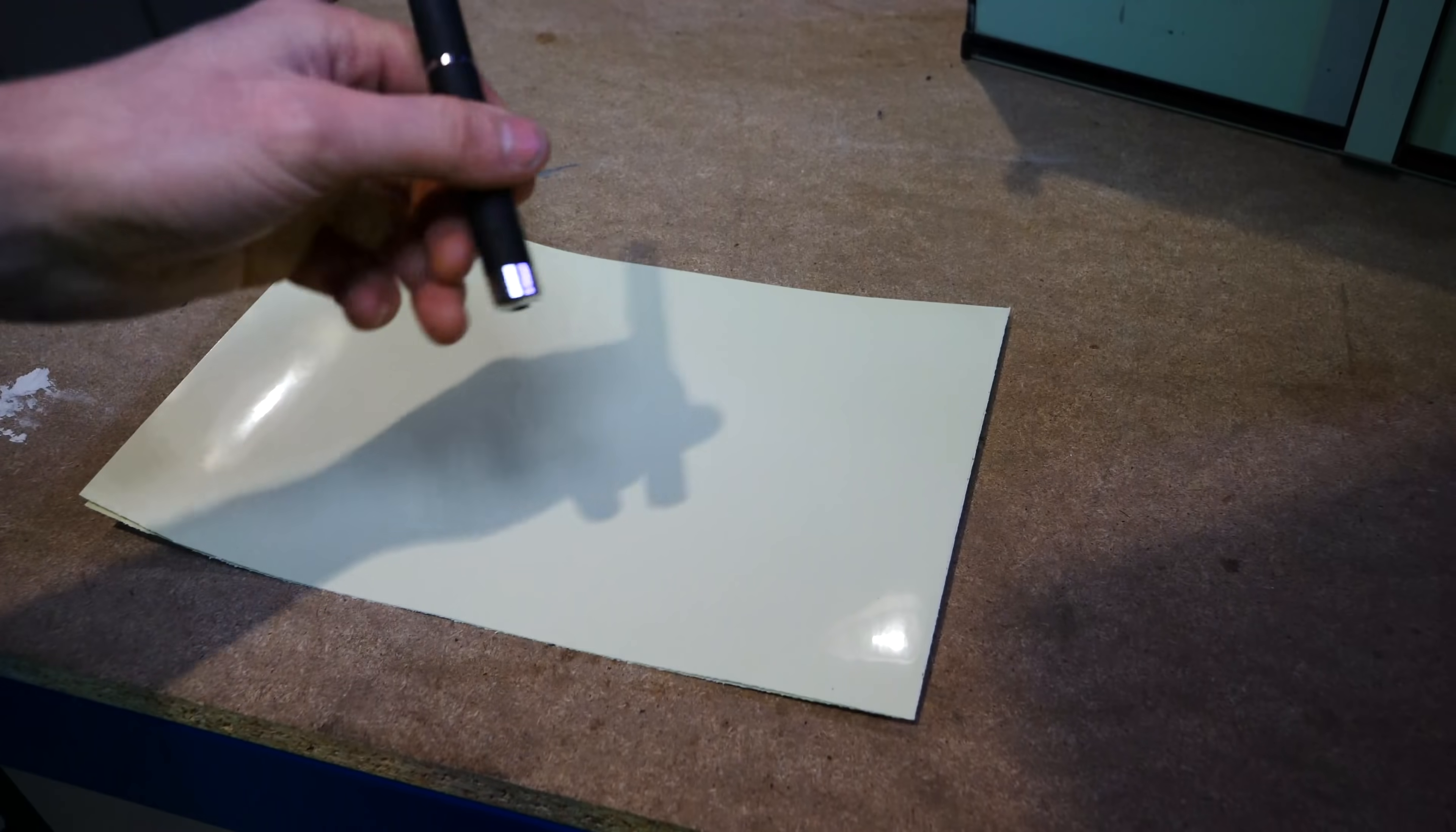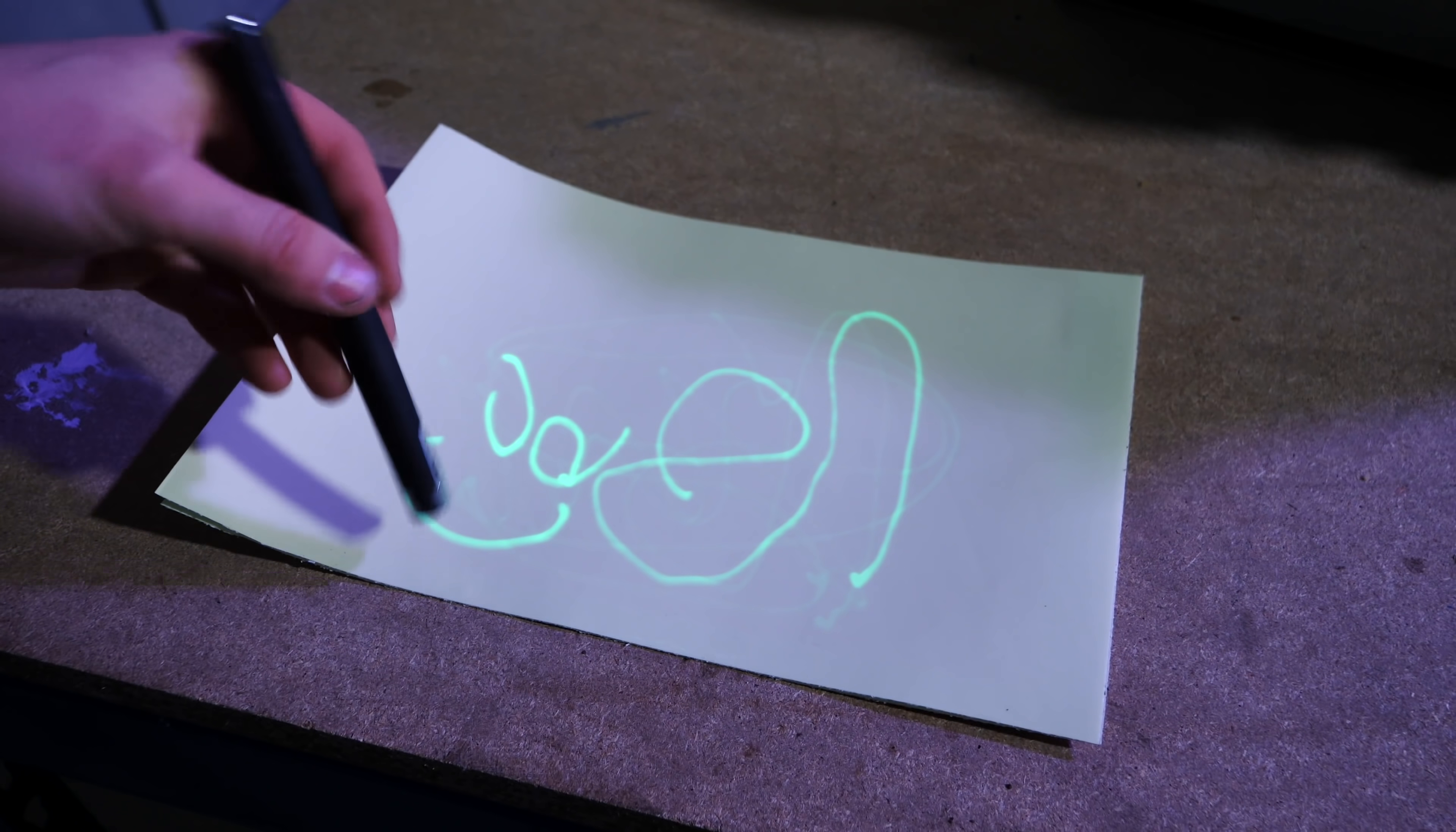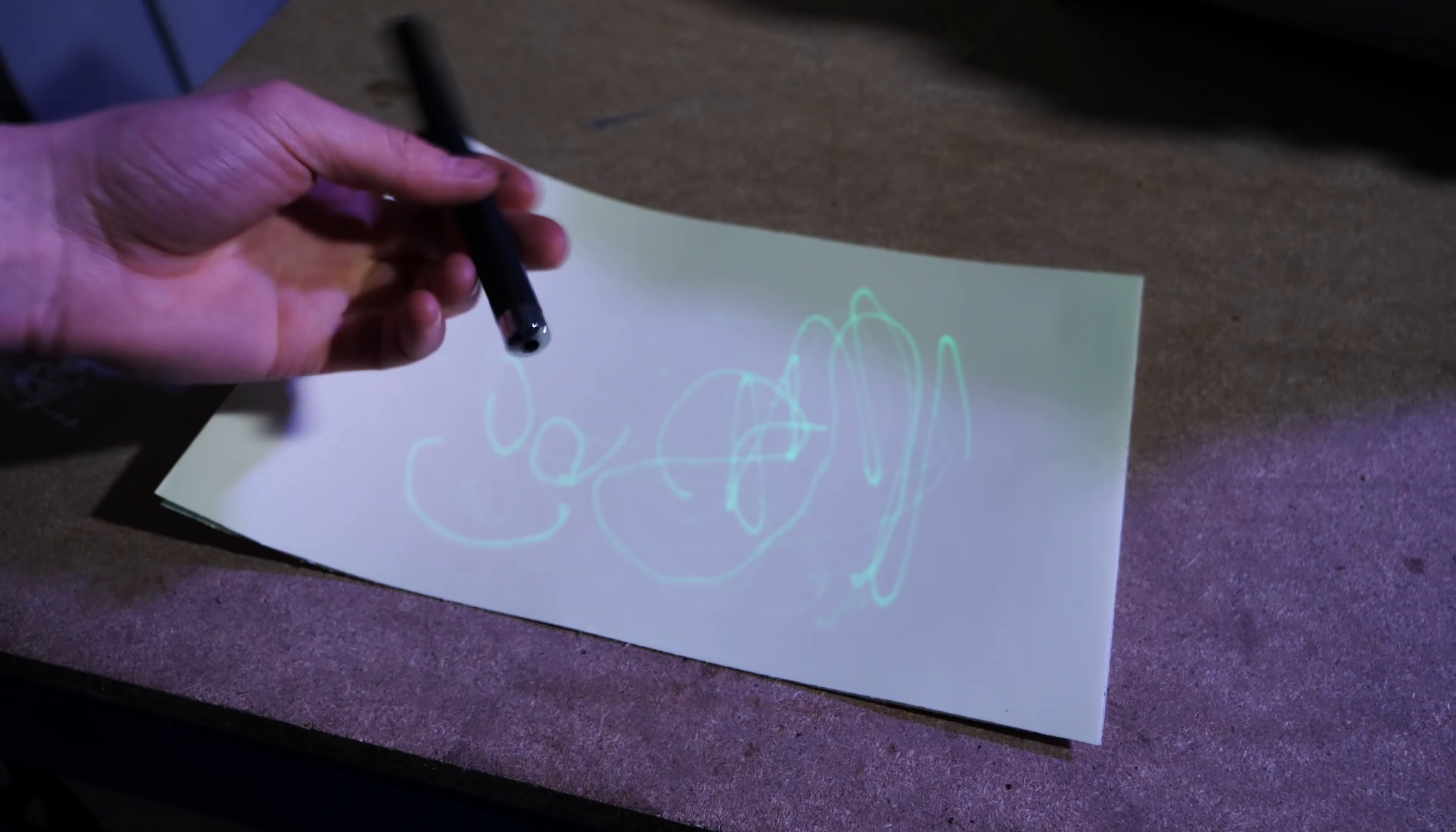As you can see, as you write on it, it basically records it onto the paper and then it stays there for a certain amount of time and runs out of energy and disappears. So this is going to act as the pen on the plotter and this is going to act as the paper, meaning we don't need to constantly replace the pen and paper.